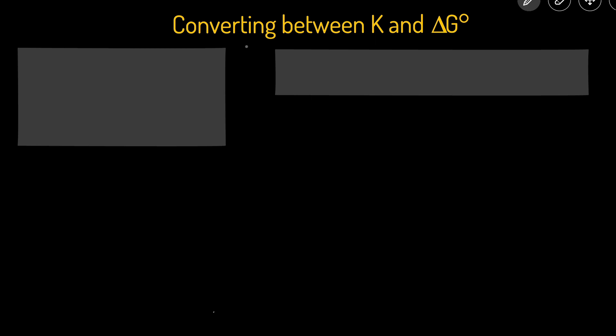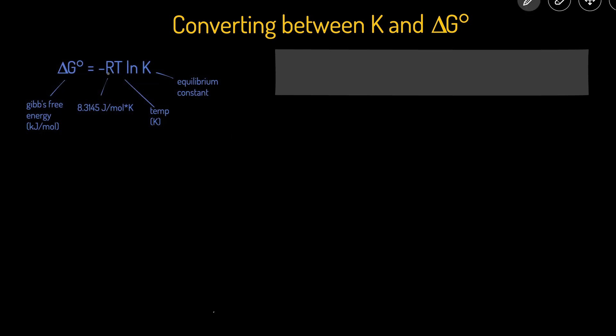In this video we'll be going over how to convert between the equilibrium constant K and the standard Gibbs free energy change ΔG°. To do that we use the equation ΔG° = -RT ln K.